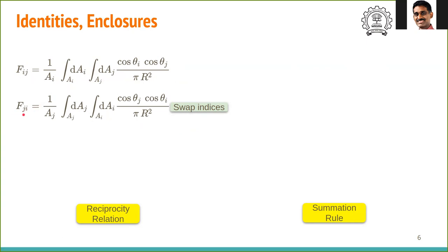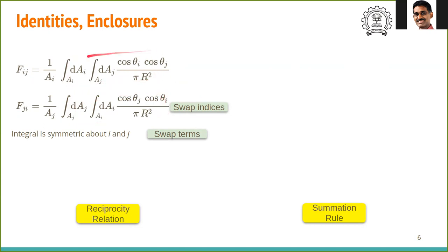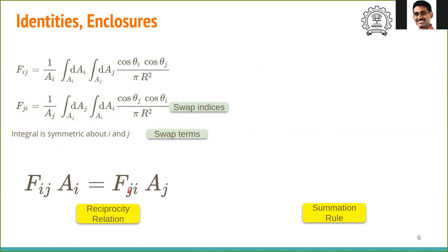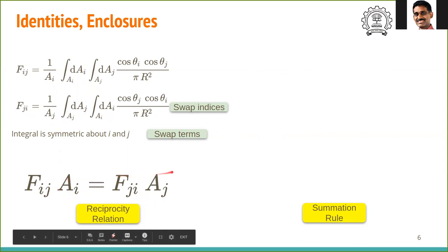Now F_ji — that is, from j to i — is simply obtained by swapping the indices i and j. Recognize that these terms can be swapped: cos theta_i and cos theta_j are commutative, so the integral is identical. Therefore we can write F_ij times A_i equals F_ji times A_j. This relationship is called the reciprocity relationship.